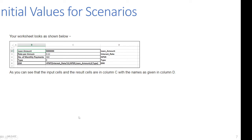Your worksheet looks as follows: loan_amount is 5,000,000; interest rate 0.12 named 'interest_rate'; n_pair 360 named 'n_pair'; type 0; and the PMT formula as the result. The constant is loan amount, and the changing variables are interest rate, number of payments, and type. All input cells and the result cell are in column C, with their names given in column D.